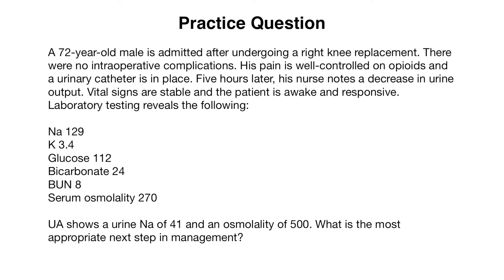Let's go over a practice question to solidify our understanding. We have a 72-year-old male who was admitted after undergoing a right knee replacement. There are no intraoperative complications. His pain is well-controlled on opioids and a urinary catheter is in place. This patient has undergone surgery and is on pain medications — SIADH can be a transient issue in cases of stress like nausea or pain caused by surgery, and he's also receiving opioids, which we said can be linked to SIADH. Five hours later, his nurse notes a decrease in urine output. Vital signs are stable and the patient is awake and responsive — so the patient is asymptomatic.